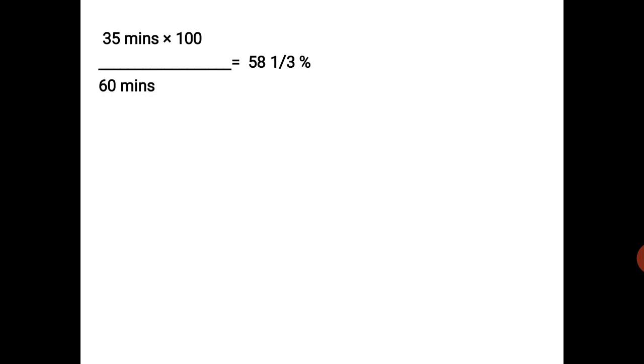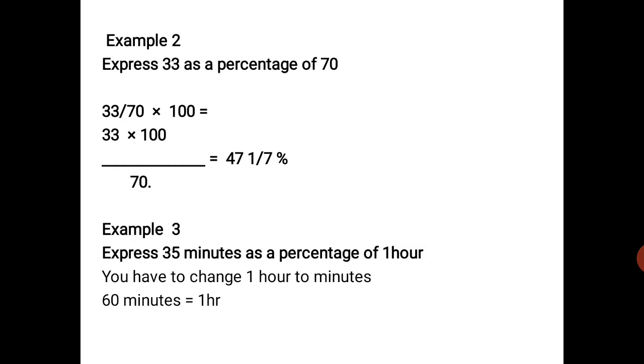We now have 35 minutes over 60 minutes, times 100 over 1, which is 35 times 100 over 60. Cancel the zeros: 2 into 6 is 3, and 10 becomes 10 — so we now have 35 times 5 over 3. Calculate: 35 times 5 equals 175. Then 175 over 3: 3 into 17 goes 5 remainder 2; 3 into 25 goes 8 remainder 1. So the answer is 58 and 1/3 percent.